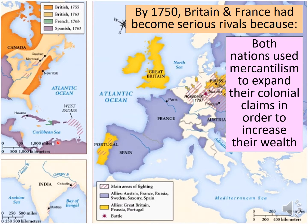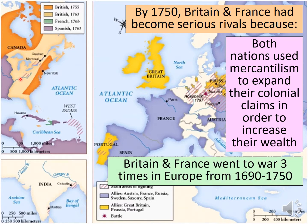Mercantilism is essentially about accumulating gold. One of the ways countries do that is through colonies. Spain used South America to get gold, shipping it back and becoming one of the most powerful countries in the world. Later, Great Britain and France saw an opportunity to gain wealth through their own colonies. Great Britain used the 13 colonies to sell tobacco and other goods, while France, in the Mississippi River area and up into Canada, was trading in furs. Because these two nations hated each other, it was inevitable that their colonies would eventually come into conflict — they were not going to live peacefully together.